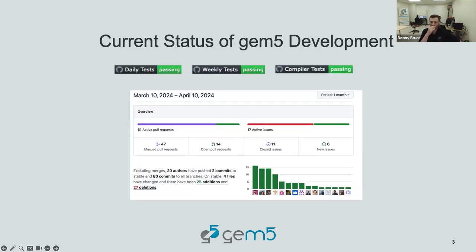Current status of GEM5 — I was almost panicking because this morning one of our daily tests kind of failed and then we managed to get it passing again. But I'm very happy that we've had consistent daily tests, weekly tests, and compiler tests passing. There was a time when we were quite bad at letting failing tests stay for a while, but now we normally have them fixed within one or two days. The tests seem to be really preventing a lot of bad code from getting in.